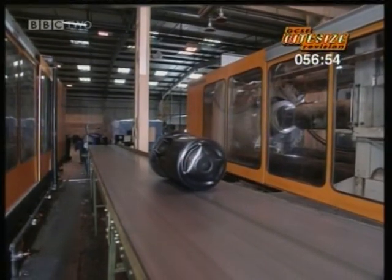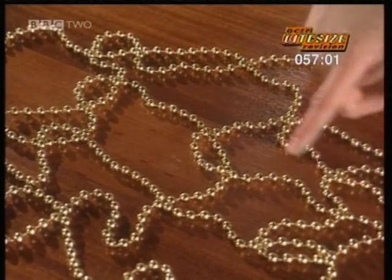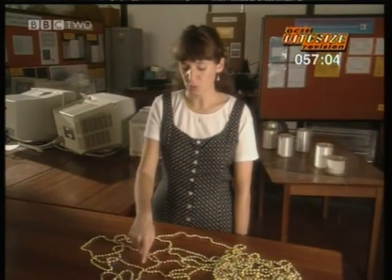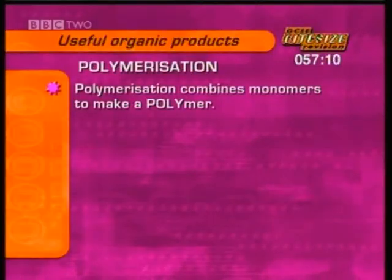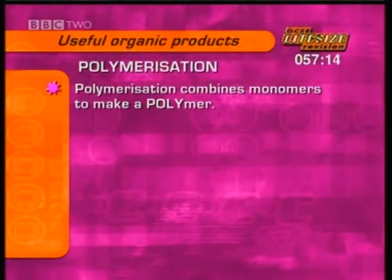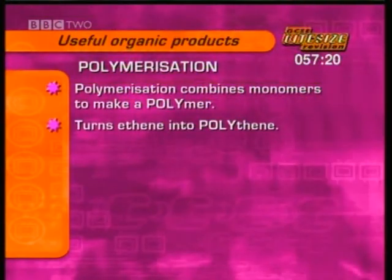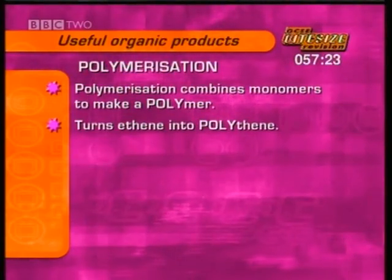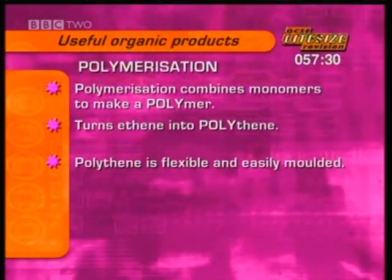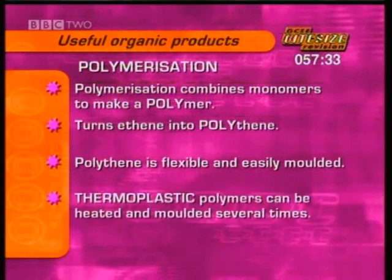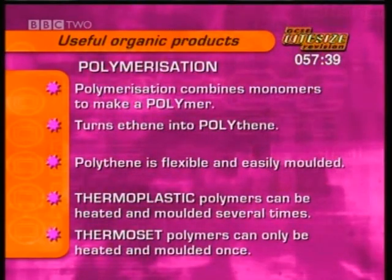In a thermoset, the polymer molecules become bonded to each other to form a network that is not flexible. If we reheat a thermoset, these bonds won't break, so we cannot remold a thermoset unlike a thermoplastic. In summary: polymerization joins single molecules called monomers into long strings called polymers. Thermoplastic polymers can be heated and molded several times; thermoset polymers can only be heated and molded once.